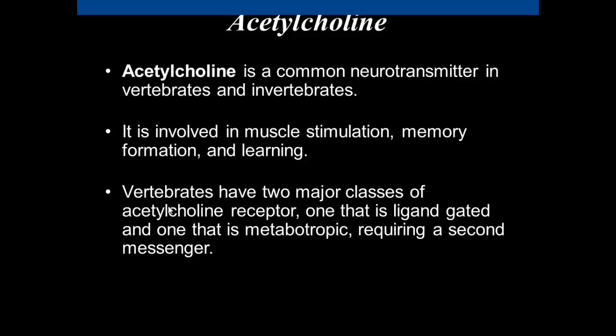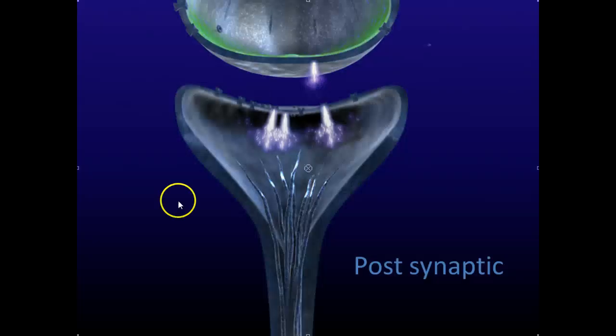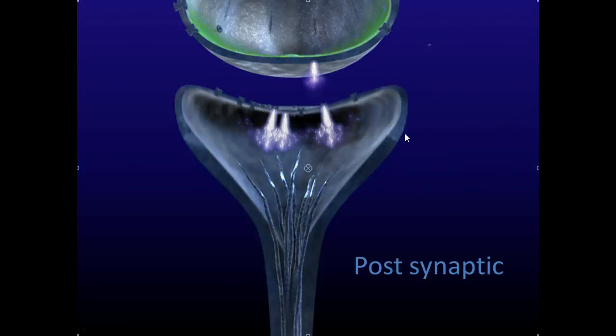A metabotropic receptor is a type of membrane receptor of eukaryotic cells that acts through a second messenger. It may be located at the surface of the cell or in the vesicles. Electrical synapses are fast — cells are connected by gap junctions, intracellular channels that allow local ion currents of an action potential to flow between neurons. In chemical synapses, the narrow synaptic cleft separates the neurons. A series of events converts the electrical signal of the action potential into a chemical signal that travels across the synapse, where it is converted back to an electrical signal in the postsynaptic cell.